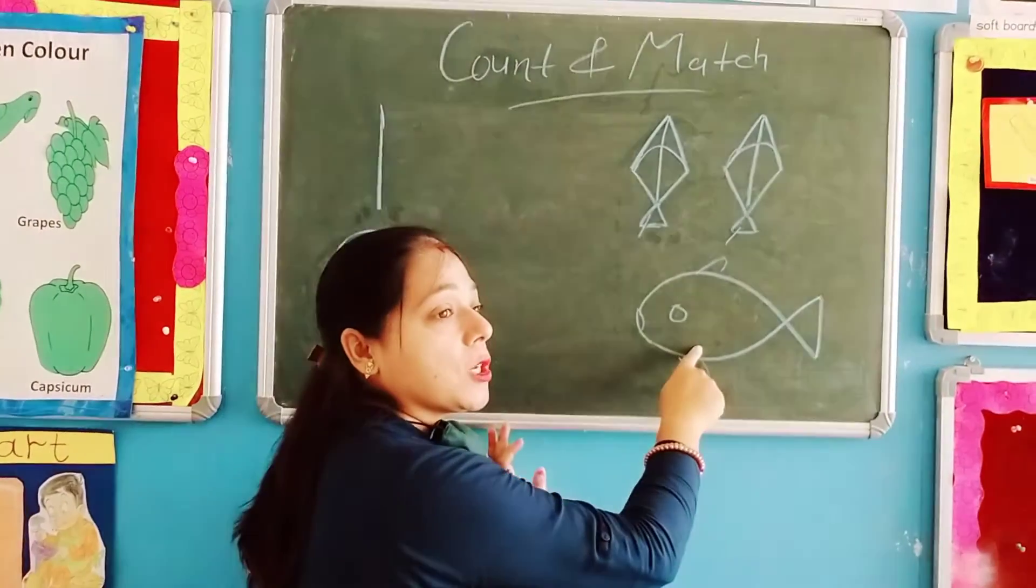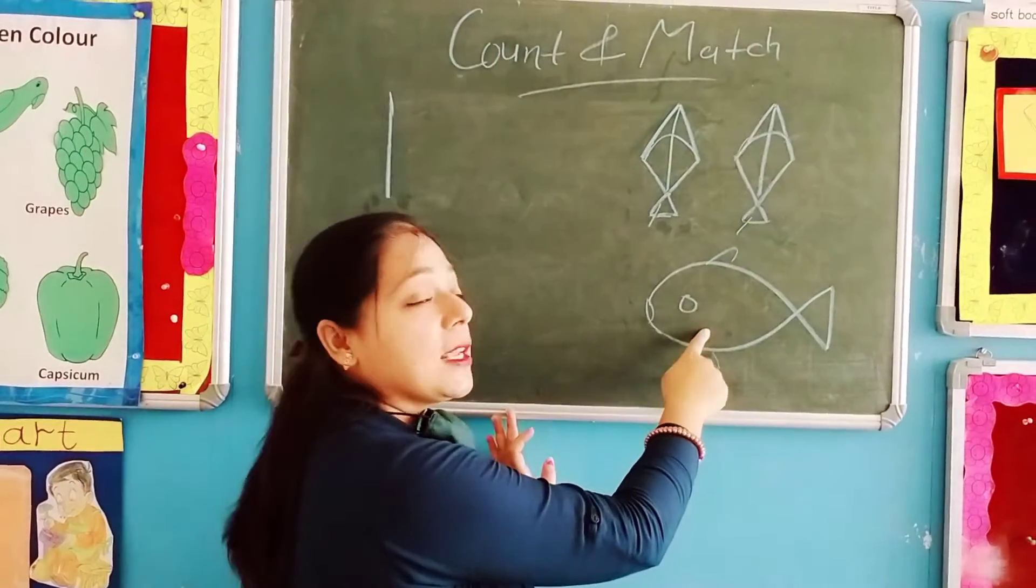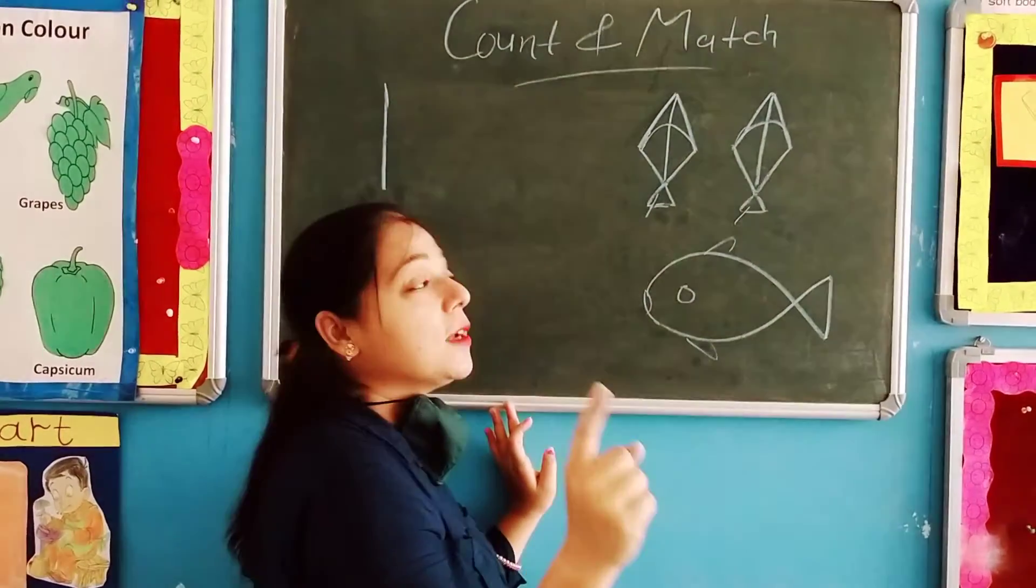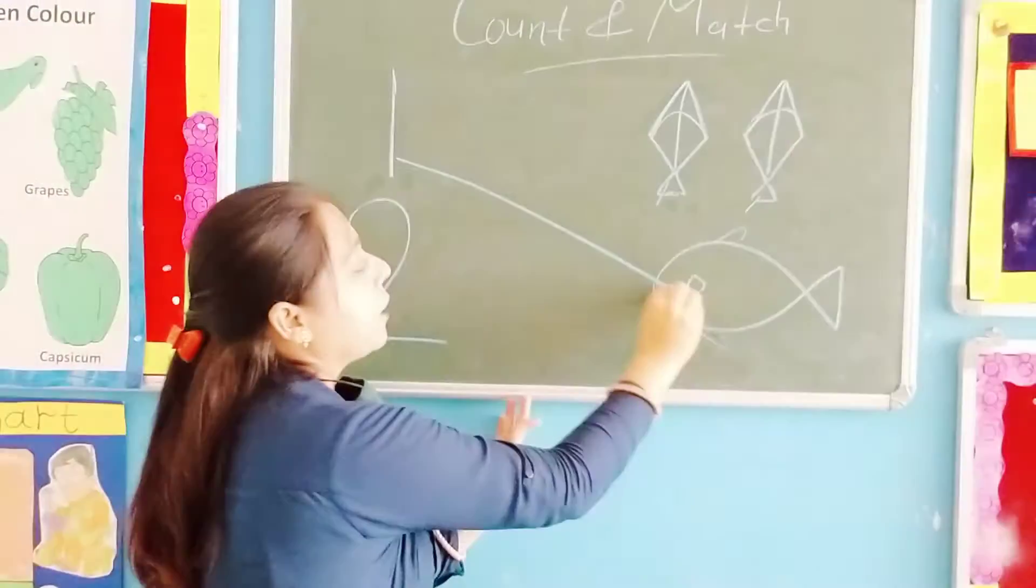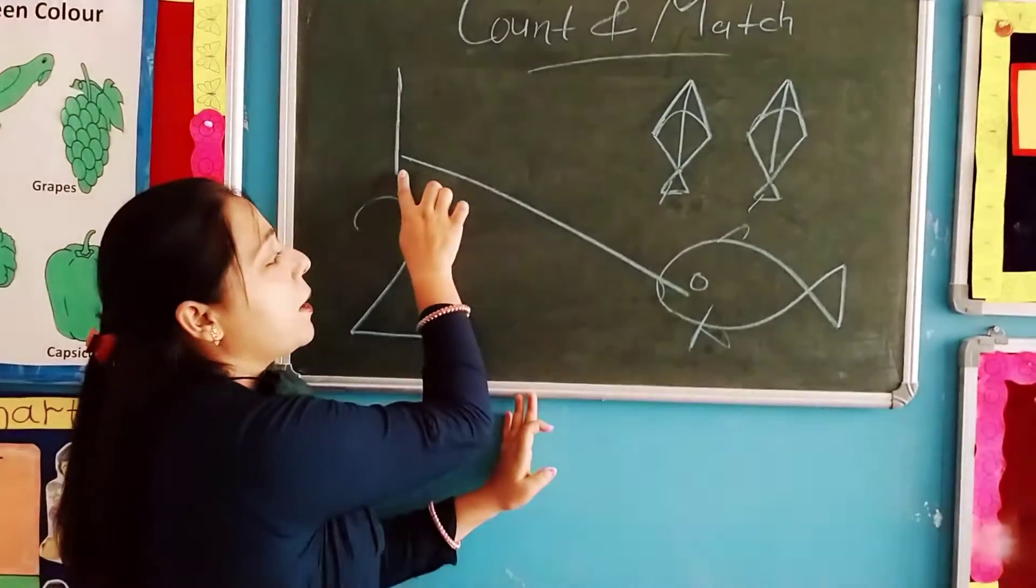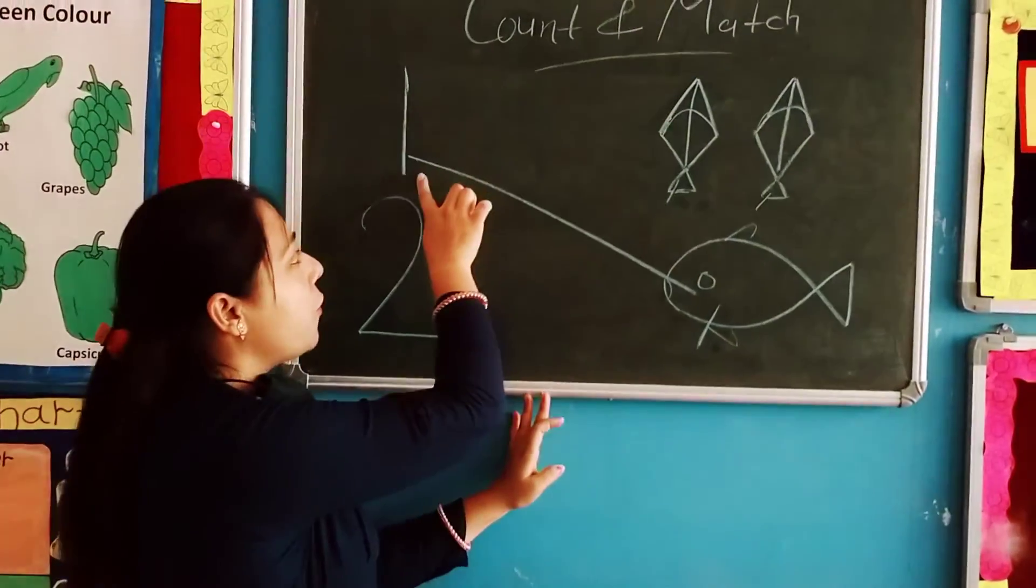How many fish? 1 fish, yes. Ye kitne fish hai? 1. So, abhi hume one number se match karenge. 1 fish, 1 number.